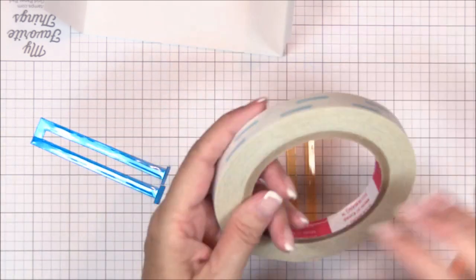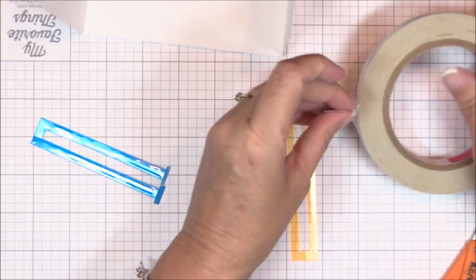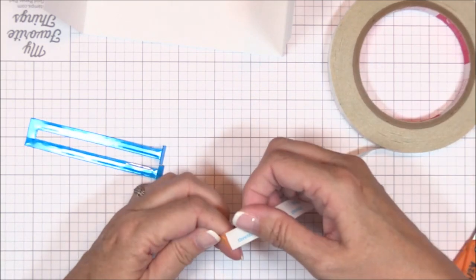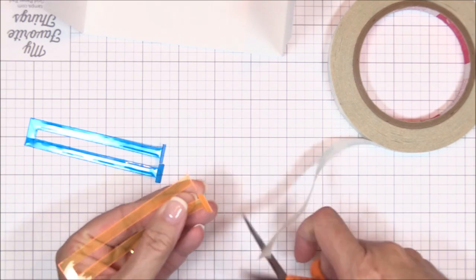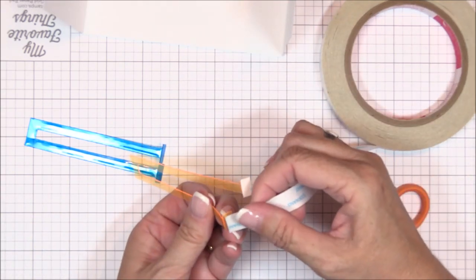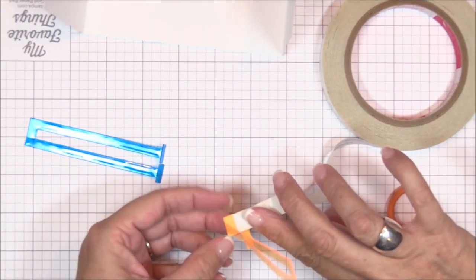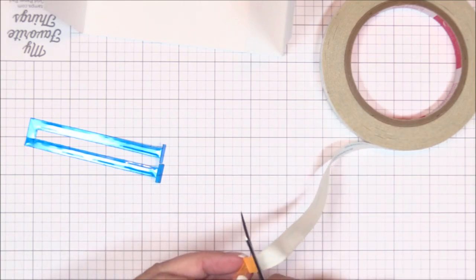Then I'll adhere some half inch double sided tape to each of the four tabs. I've tried a few methods of attaching the mechanism to the card base, and I found that the score tape works the best. But if you don't have score tape, you can also use your favorite quick drying liquid adhesive like Glossy Accents or Diamond Glaze.